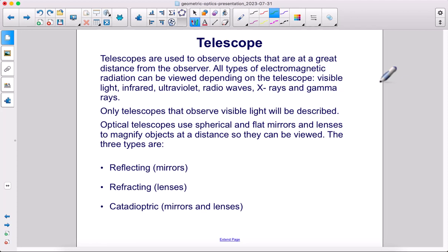Only telescopes that observe visible light will be described here. Optical telescopes use spherical and flat mirrors and lenses to magnify objects at a distance so they can be viewed. The three types of telescopes are reflecting, refracting, and catadioptric.